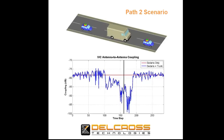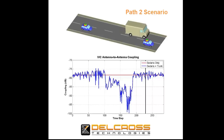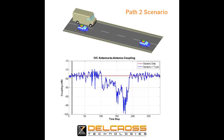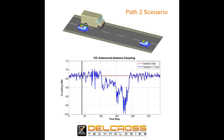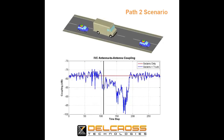The addition of the van to the scenario adds some noise to the antenna coupling curve — that's the blue curve — as the van travels through the environment. Watch what happens to the antenna coupling when the receiving sedan ends up in the shadow of the van. The antenna coupling drops a full 10 dB below the previous minimum when the van was between the two sedans. The multipath reinforcement at the midpoint of the van's travel is essentially eliminated, so the antenna coupling stays below minus 75 dB.